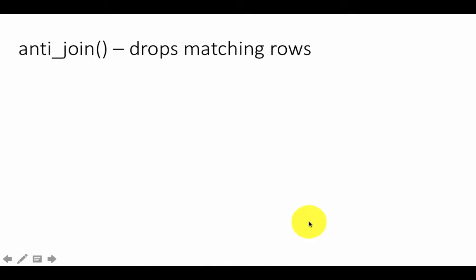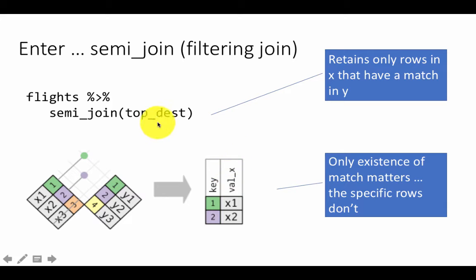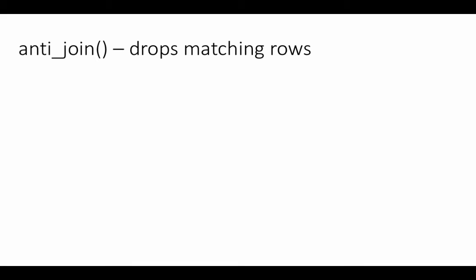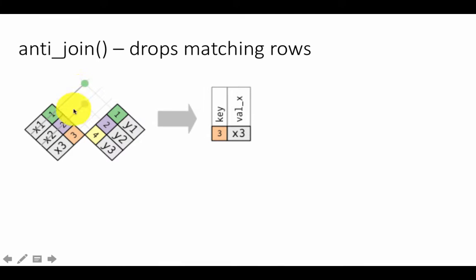Anti-join is the exact opposite of semi-join. In a semi-join we retain everything where there is a match; in an anti-join we retain only those rows for which there is no match — or equivalently, drop everything for which there is a match. So if there is a match for rows x1 and x2, drop them and keep only x3.